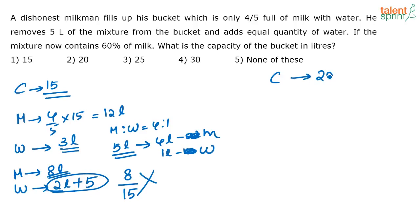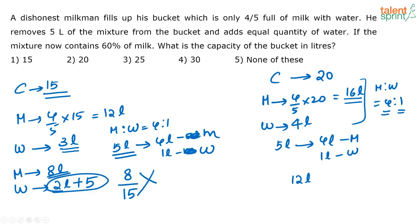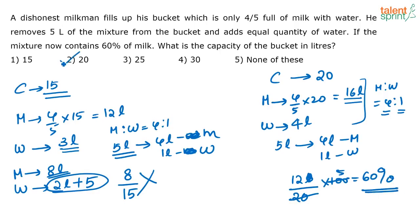Option 2: capacity is 20 liters. Four-fifths of 20 is 16 liters of milk, and four liters of water to fill the bucket. Milk to water ratio is four to one. When removing five liters, four liters is milk and one liter is water. So 16 minus 4 gives 12 liters of milk remaining. After refilling with water, out of the total 20 liters, 12 liters is milk — that is 60%. So the correct answer is option 2: 20 liters.